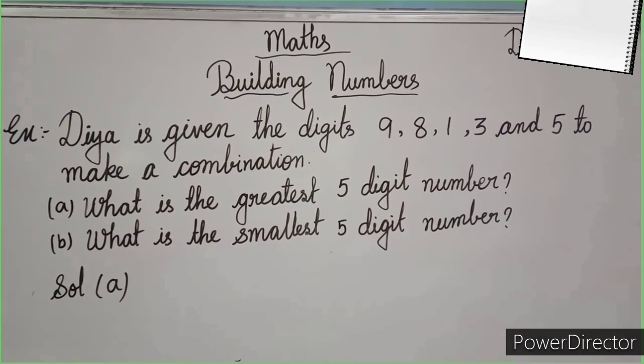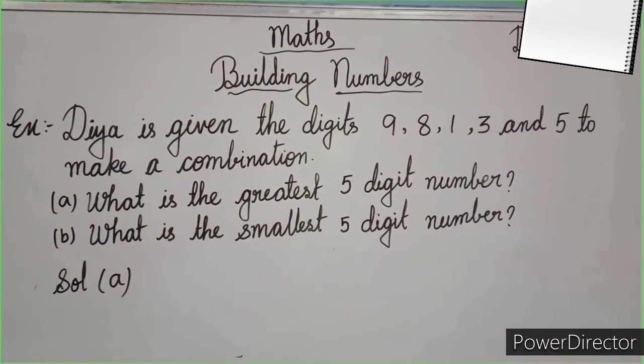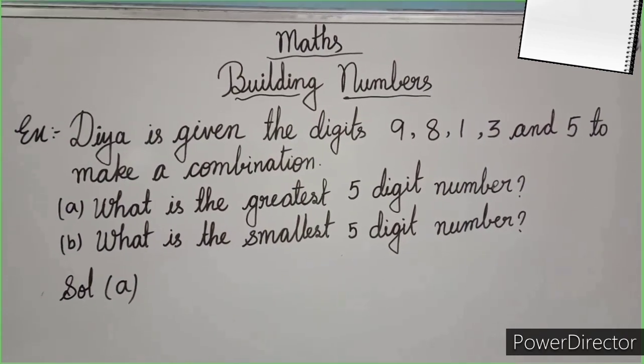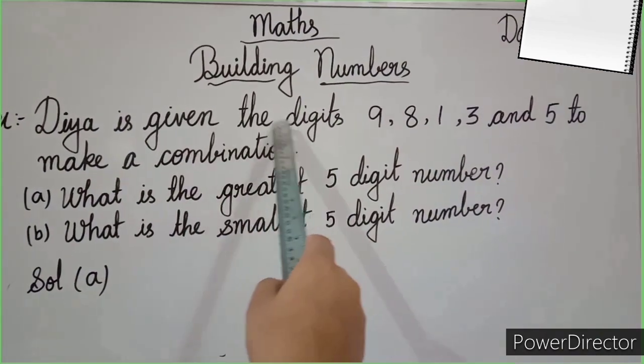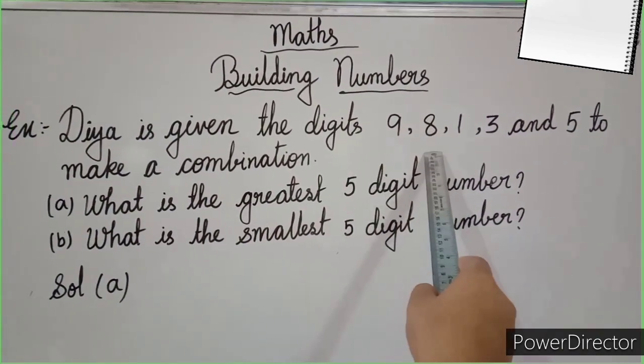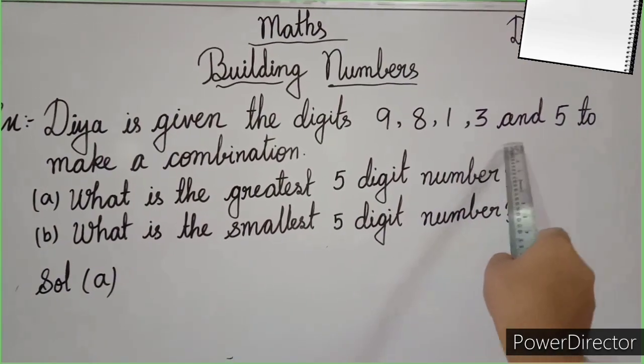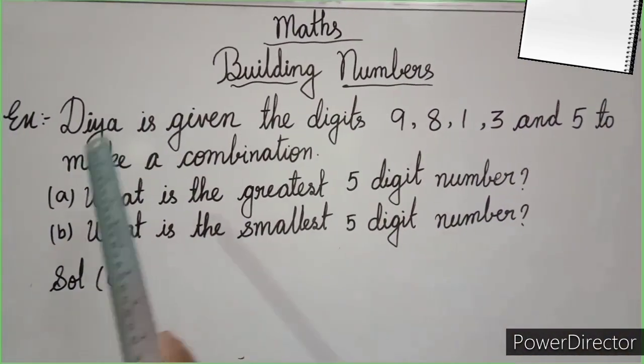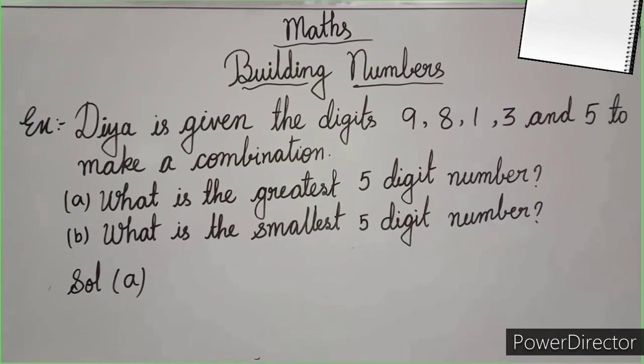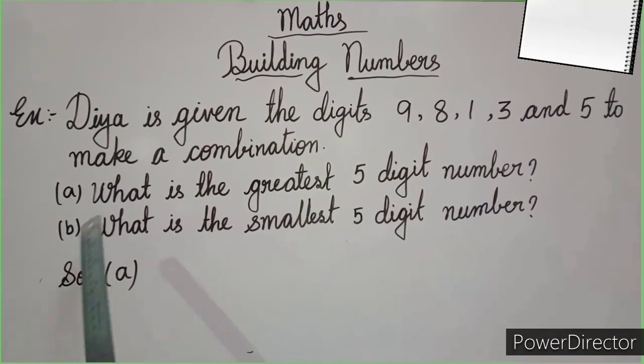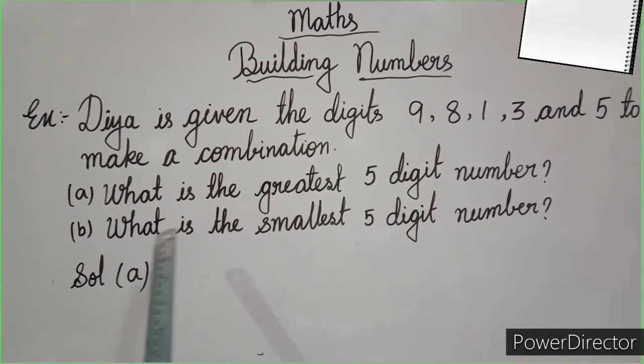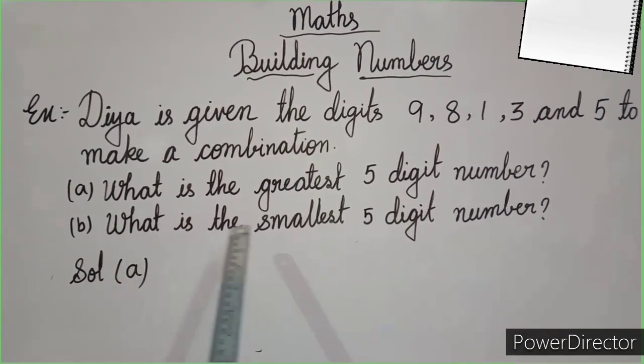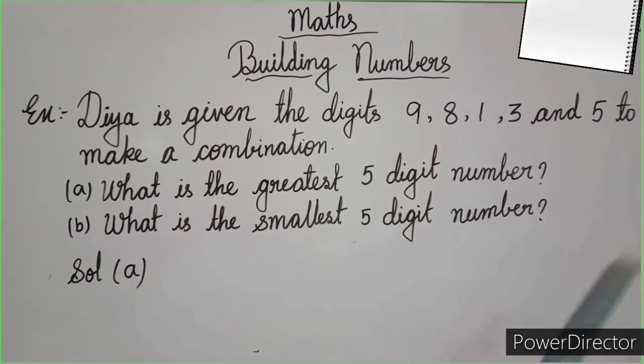We will start the topic building number with an example. So here is the example. Diya is given the digits 9, 8, 1, 3 and 5 to make a combination. And the first question arises, what is the greatest 5 digit number? And the second one is, what is the smallest 5 digit number?